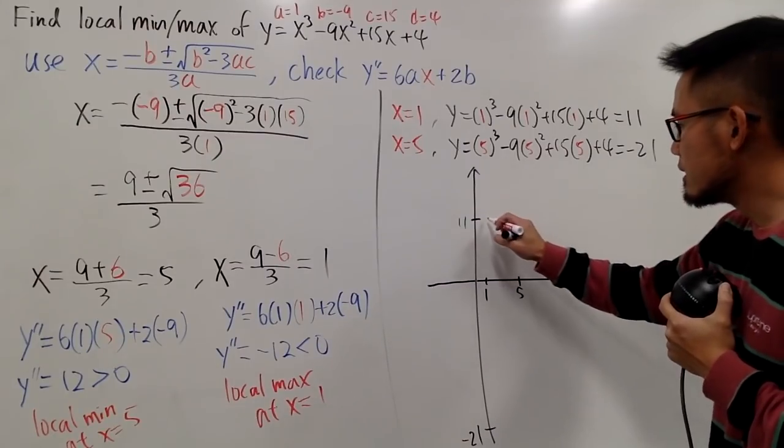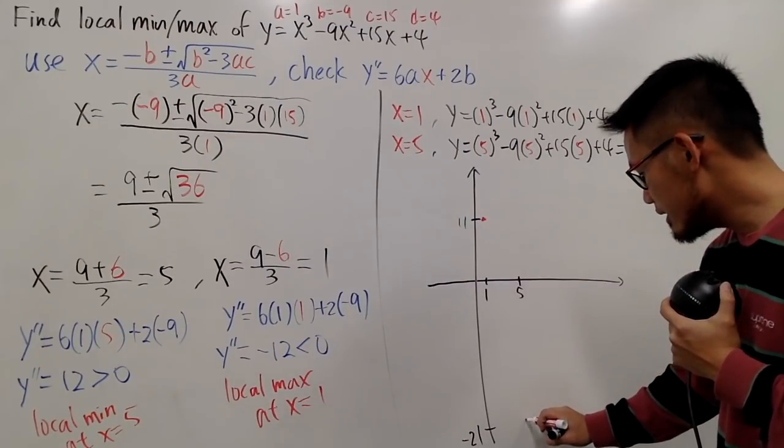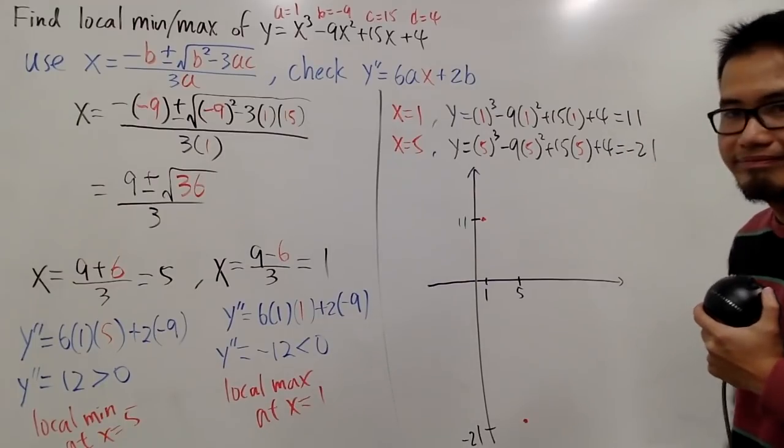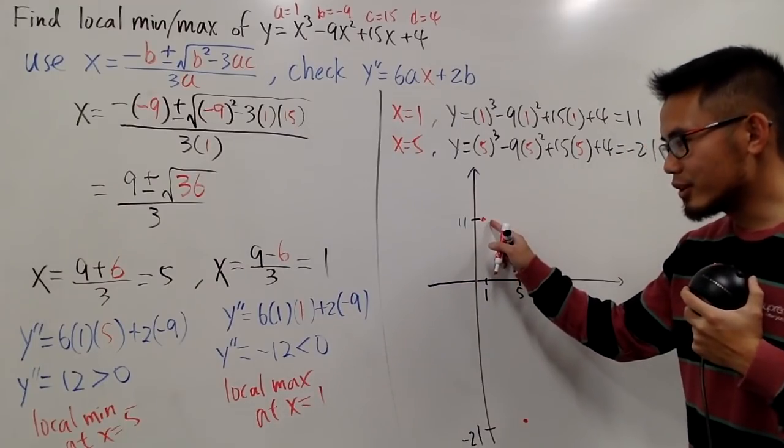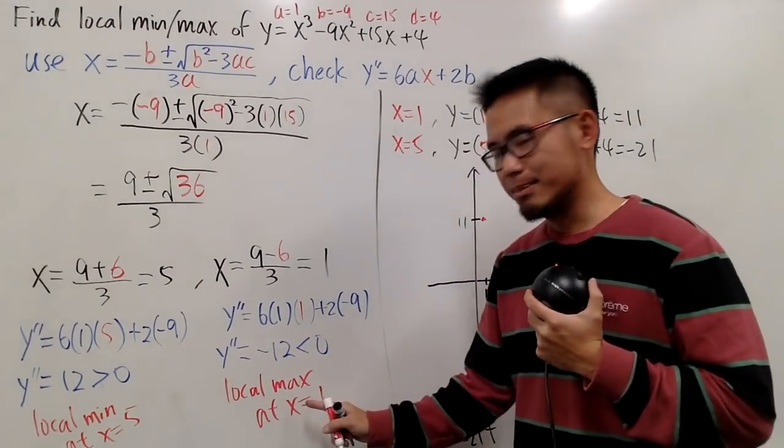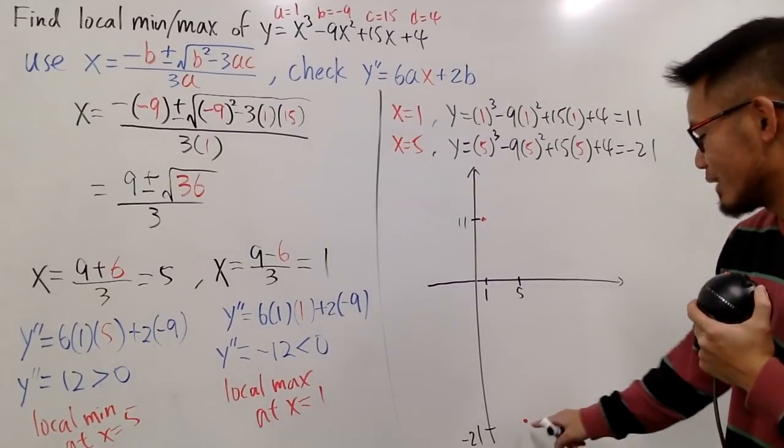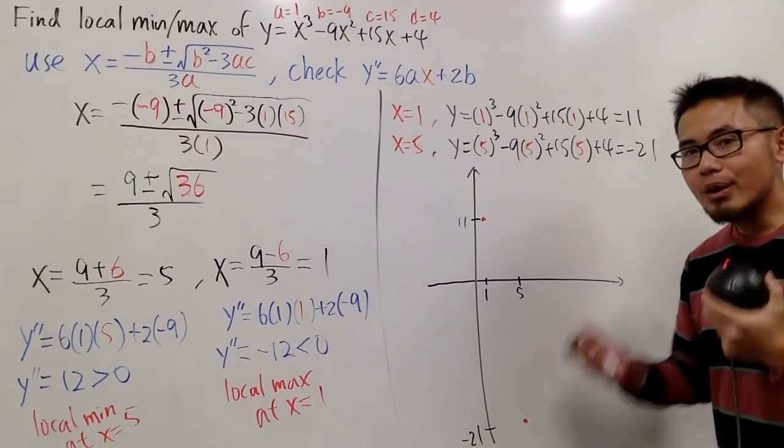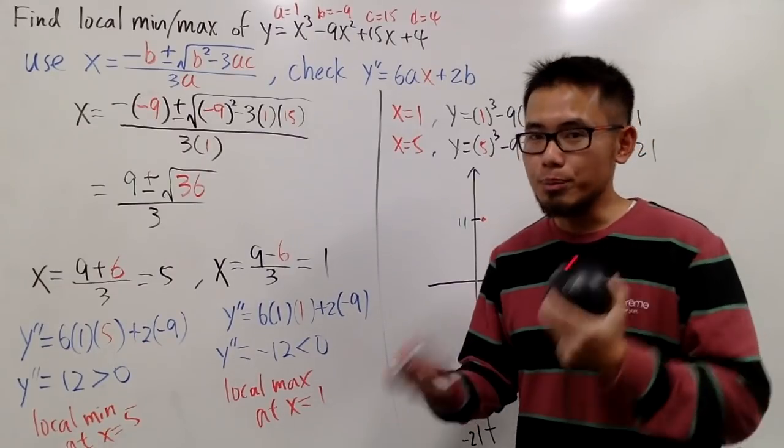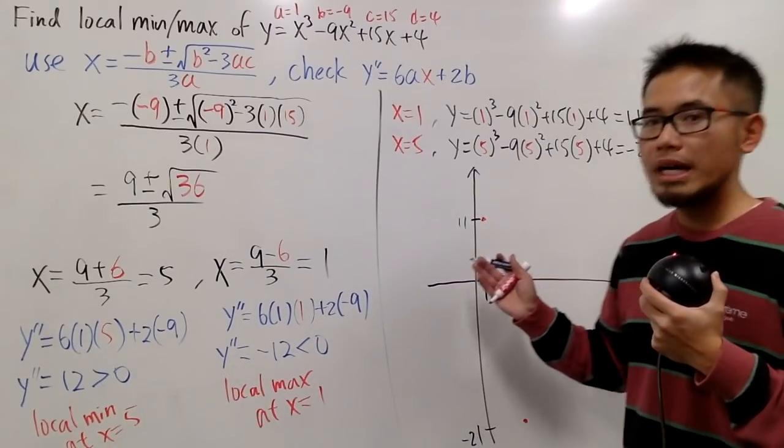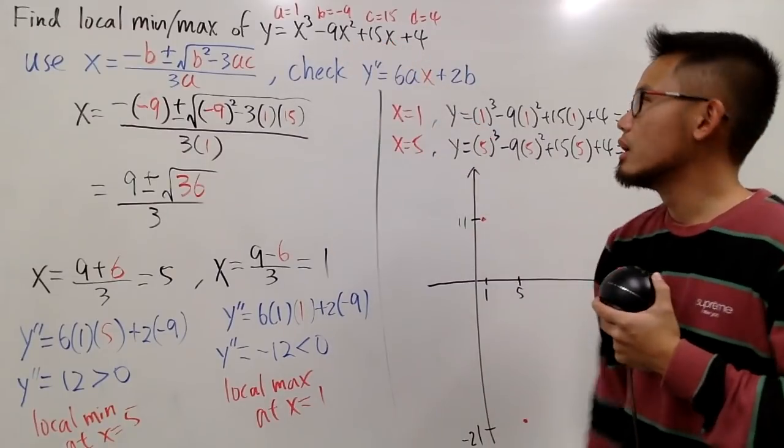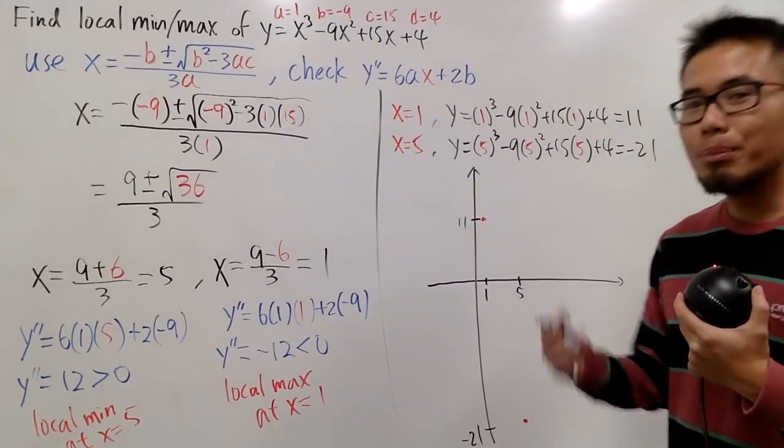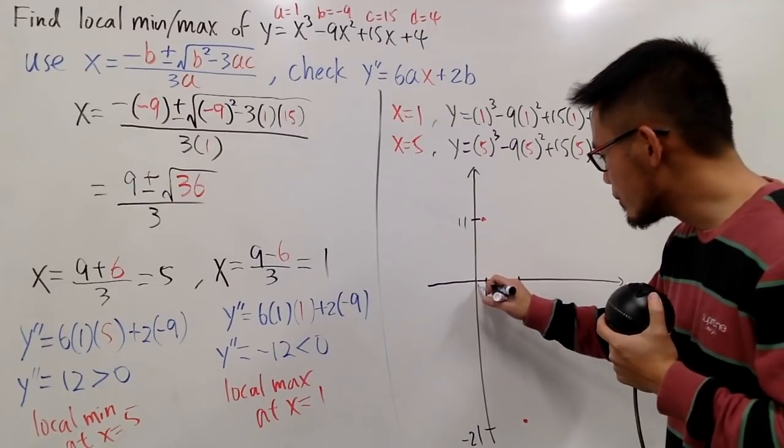And we have these two points. So we have this right here, and this right here. And you know this right here is going to be a local maximum, at X equals 1. And likewise, this is going to be a local minimum. Of course, if you would like to have more points, you can just plug in more X values into the original equation. And I'll do one more point.